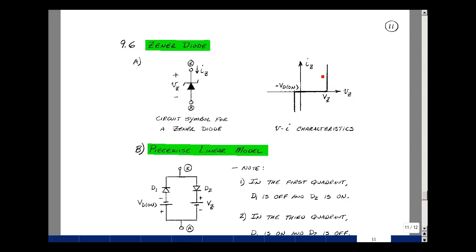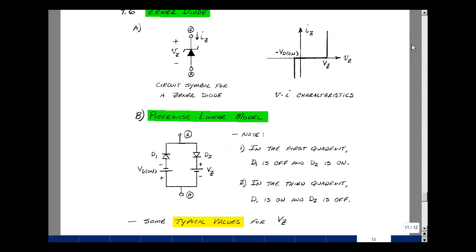Let me propose a model for this. The current I sub Z is positive, which is in this direction. It can only go this way, come out this side. If this diode is on, then this one should be off.